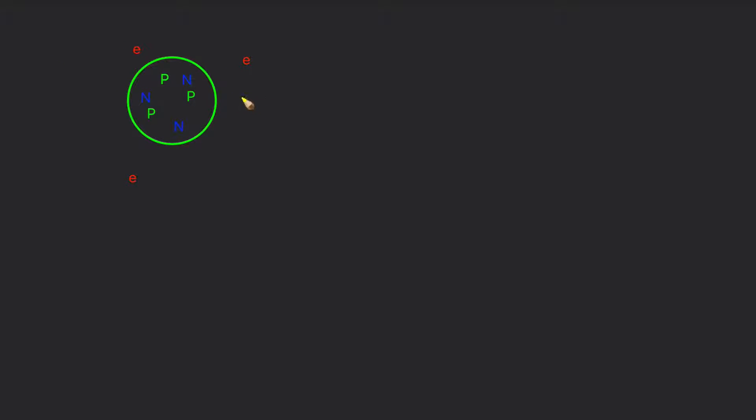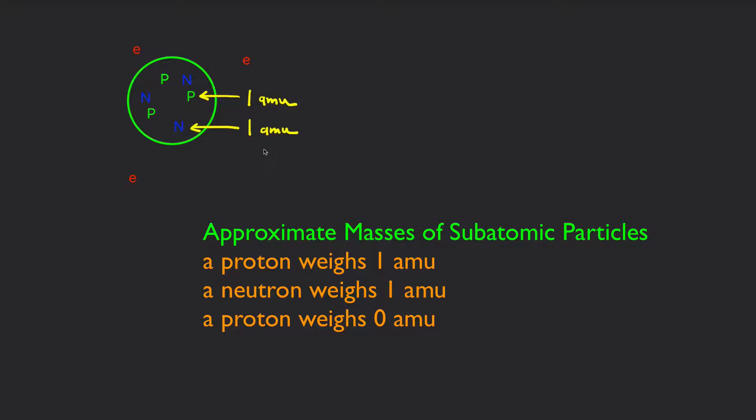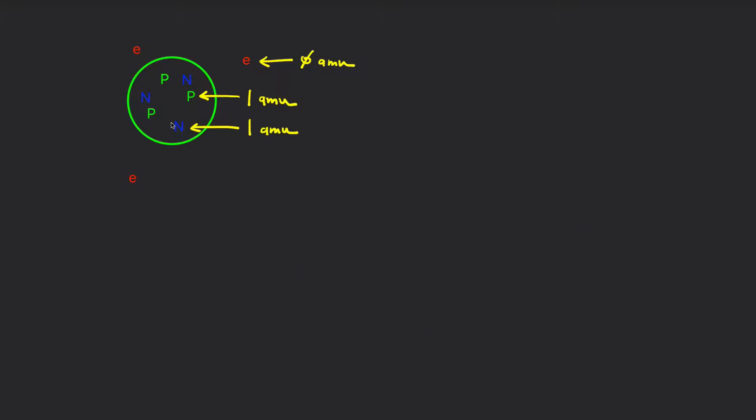Now let's assign masses to these. The mass of a proton is assumed to be one amu, atomic mass units. The weight of a neutron is also set at about one atomic mass unit. But an electron, we're just going to ignore the weight of that. So, what this means is the weight of this particular atom, as shown, would be 6 amu. We have three protons, each of which weighs one amu, and three neutrons, for a total of 6.